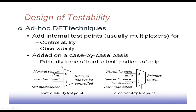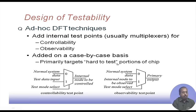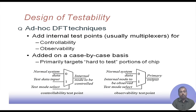This approach is quite ad hoc — wherever it is difficult to observe or control a line, multiplexers are inserted. We primarily target hard-to-test portions of the chip where it is very difficult to put a particular signal line to a desired value. This has to vary from circuit to circuit, and it is the hard-to-test regions that are targeted in this fashion.